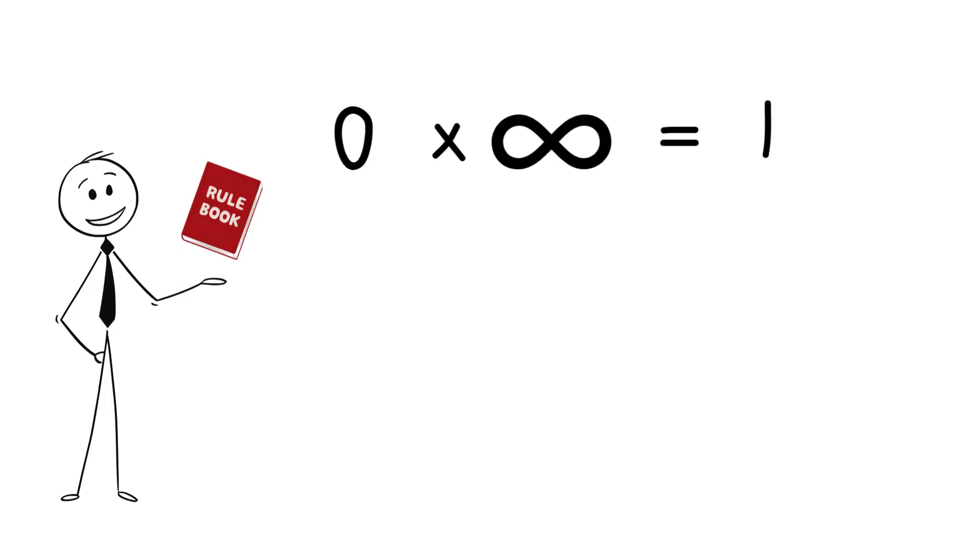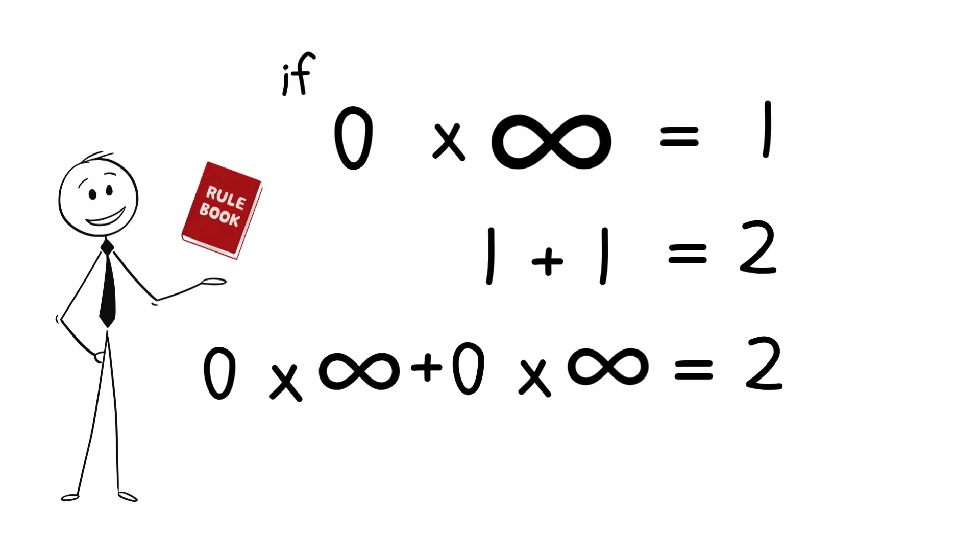Okay, let's see what happens. If zero times infinity equals one, then what is one plus one? That's two. And since one is zero times infinity, then two must be zero times infinity plus zero times infinity.